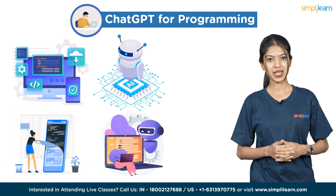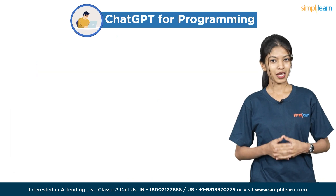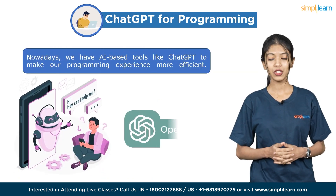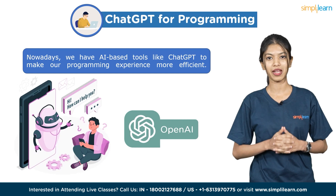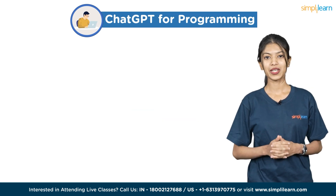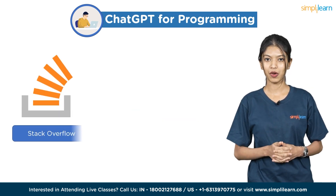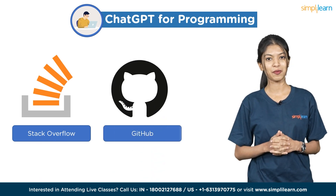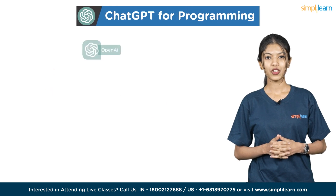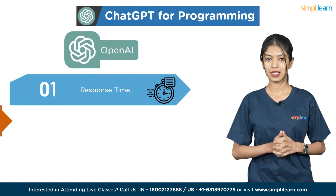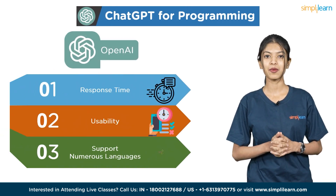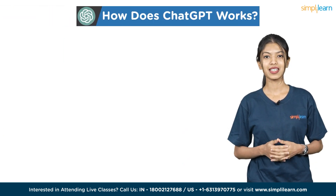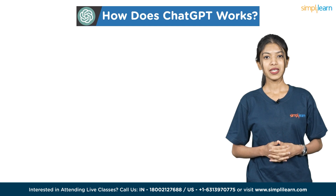So how can a programmer achieve maximum code efficiency? Nowadays we have AI-based tools like ChatGPT to make our programming experience more efficient. Although there are several coding platforms such as Stack Overflow and GitHub where programmers can find solutions, ChatGPT stands out from the competition because of its quick response time, usability, and support for numerous languages, among many other benefits.